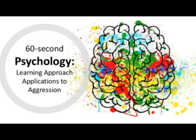The learning approach is an important tool to understand how aggressive behaviour is developed and therefore also how it can be reduced. For example, positive role models can be used as a strategy to promote observation and imitation of good behaviours rather than aggressive ones. Operant conditioning can also be used to deter aggression through the use of punishment, as behaviour is less likely to be repeated when it is followed by a punishment.